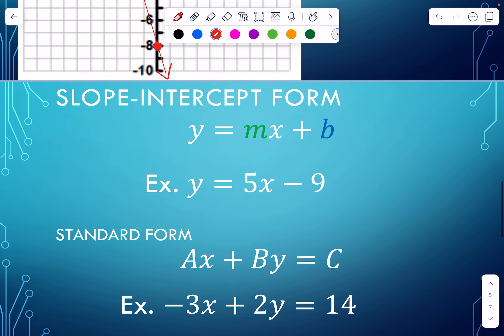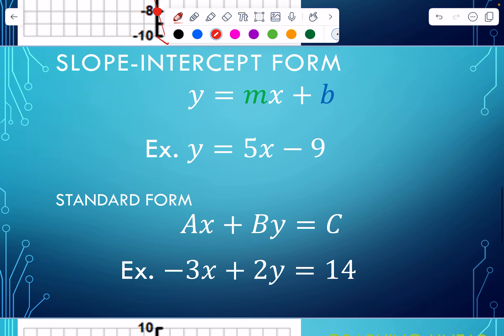Now, slope-intercept form, remember the m is the slope, the b is the y-intercept. When we go to standard form, remember standard form is Ax plus By equals C, where A, B, and C are all whole numbers or integers. No fractions. And when we graph this, the easiest thing to do with standard form is to convert it back to slope-intercept. So we're going to do a little solving here.